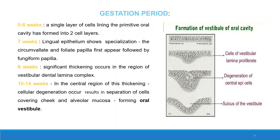On the 8th week, significant thickening occurs in the region of the vestibular dental lamina complex. In the center of this thickening, cellular degeneration occurs, resulting in separation of cells covering the cheek and alveolar mucosa, giving rise to the oral vestibule on the 10th to 14th week.